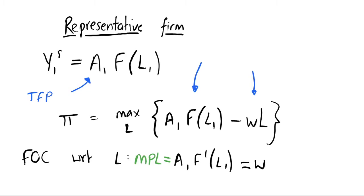The left-hand side of this condition is the marginal product of labor: our technology A1 multiplied by the derivative of the production function with respect to labor. This equals the wage rate w. This makes sense — at the optimum, labor is paid its marginal product. This result tells us that the wage rate w depends on our productivity parameter A1, so our wage in period 1 is a function of productivity.